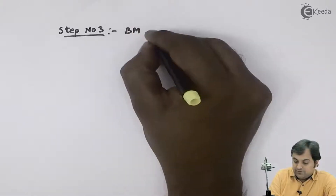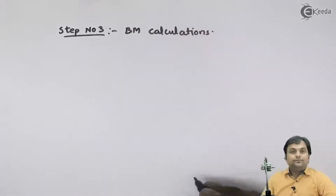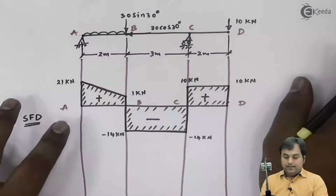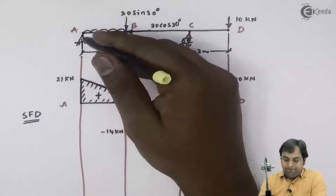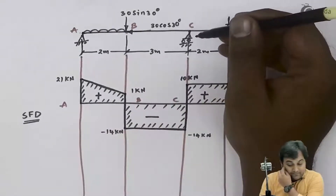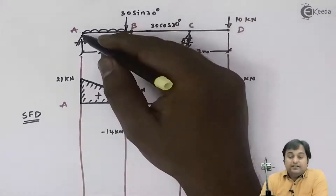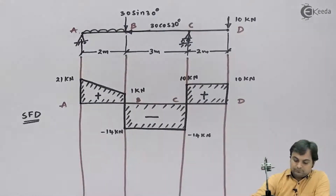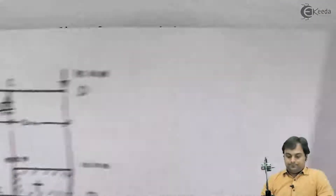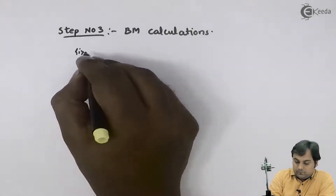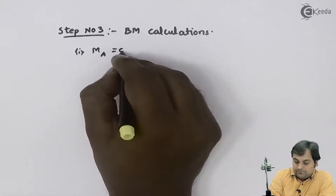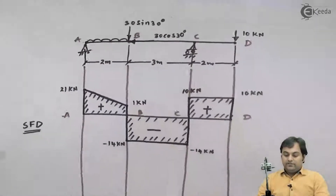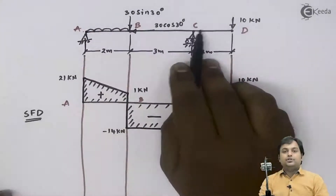Now if we look at the beam given in the problem, this beam ABCD is hinged at A and roller supported at C. For calculating the bending moment at a hinge support, the bending moment would be zero, so moment at A is equal to zero. Here we have C to D as the overhanging portion of the beam.